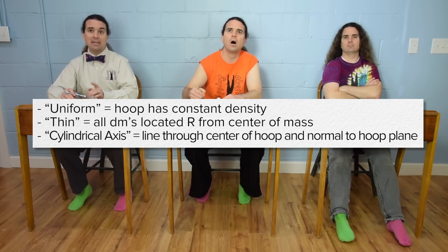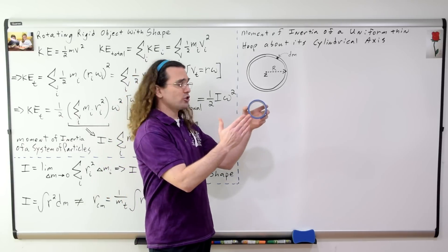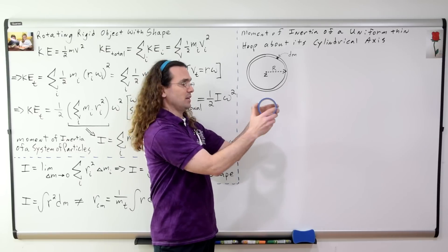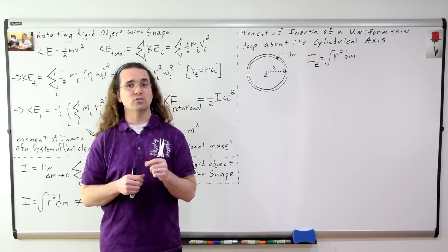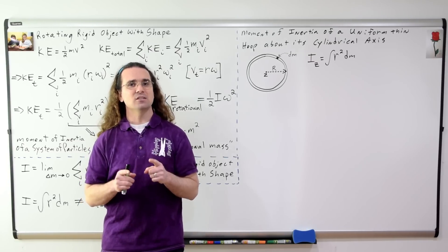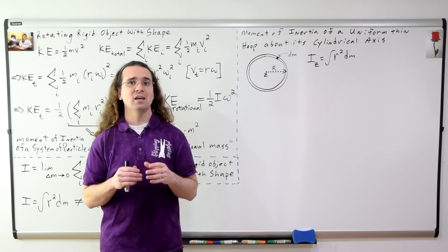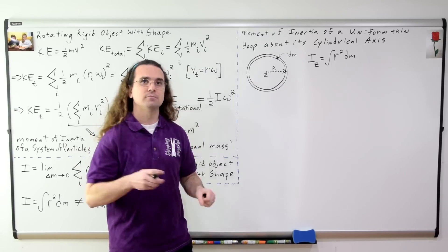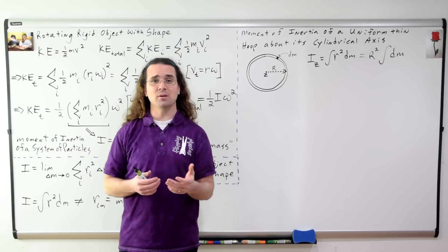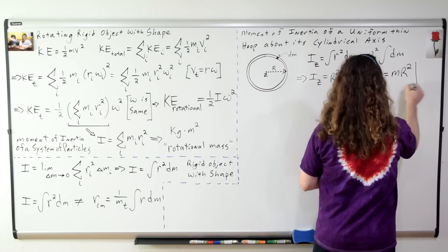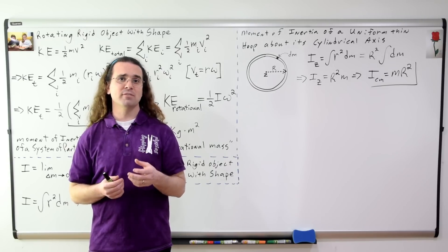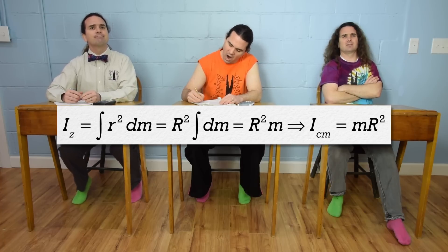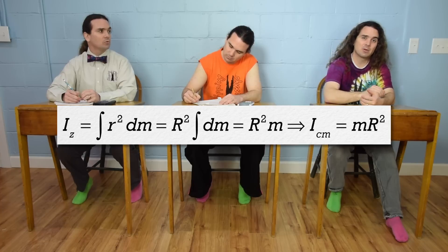We are determining the moment of inertia as the hoop rotates around this point in this plane. The moment of inertia about point z equals the integral of r squared with respect to mass. Notice that each piece dm is located the same distance from point z — it is the radius of the hoop, capital R. Because each piece dm is at the same distance R from the axis of rotation, we can replace lowercase r with the constant R and take it out from under the integral. The integral of dm is just mass. Therefore, the moment of inertia of a uniform thin hoop about its cylindrical axis equals the mass of the hoop times the radius squared. That makes sense — the mass of the entire hoop is located the same distance R from the axis of rotation.